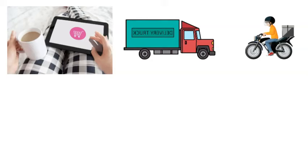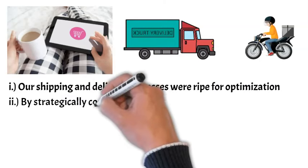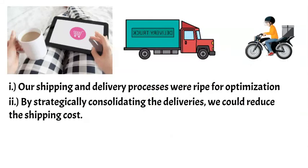The story is related to our logistics partner. The trend we were noticing was a continuous rise in shipping costs, resulting in eroding profit for both of us and costly products for our customers. Being a data-intensive e-commerce platform, we began by analyzing the shipping data to understand the patterns, uncover the reasons behind the rising shipping costs, and find a solution. The analysis revealed two important things: our shipping and delivery processes were ripe for optimization, and by strategically consolidating deliveries, we could reduce the shipping cost. I discussed both with our logistics partner and worked out a plan to implement it.